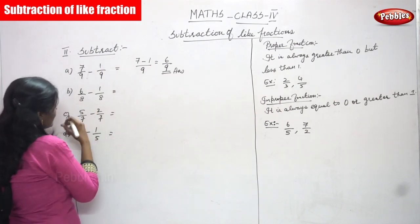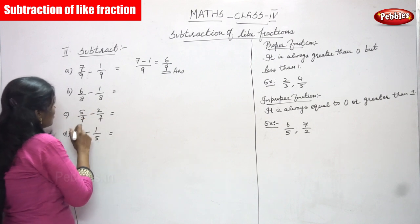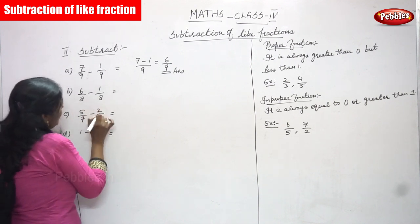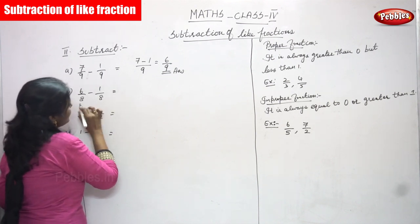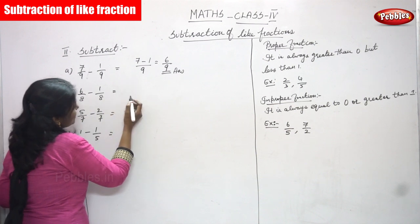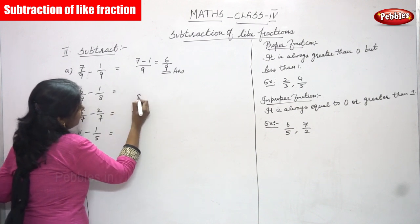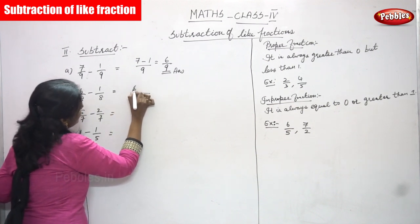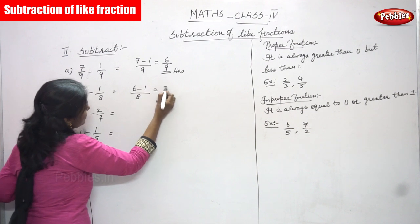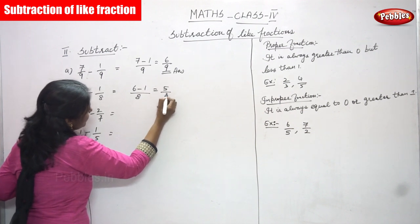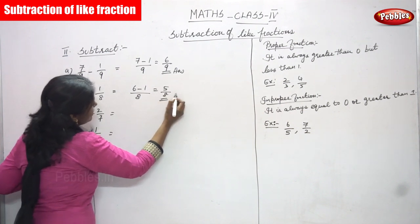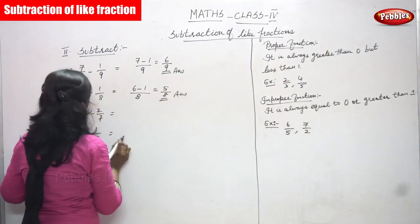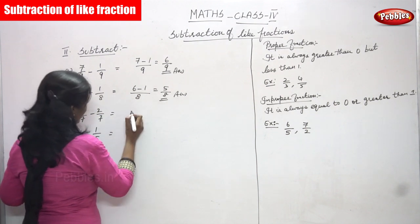The second sum is 6/8 minus 1/8. The denominators are the same because it is a like fraction, so write the denominator one time. Then subtract the numerators: 6 minus 1 gives you 5/8, which is the right answer.